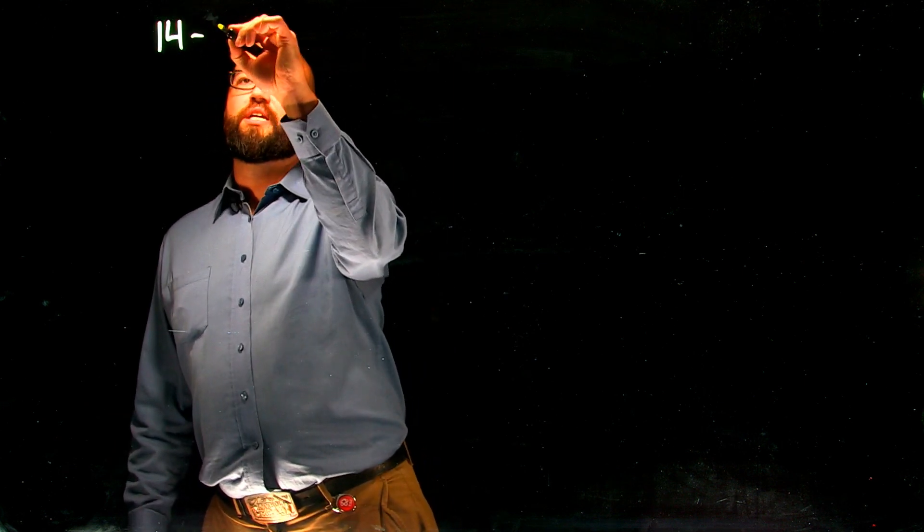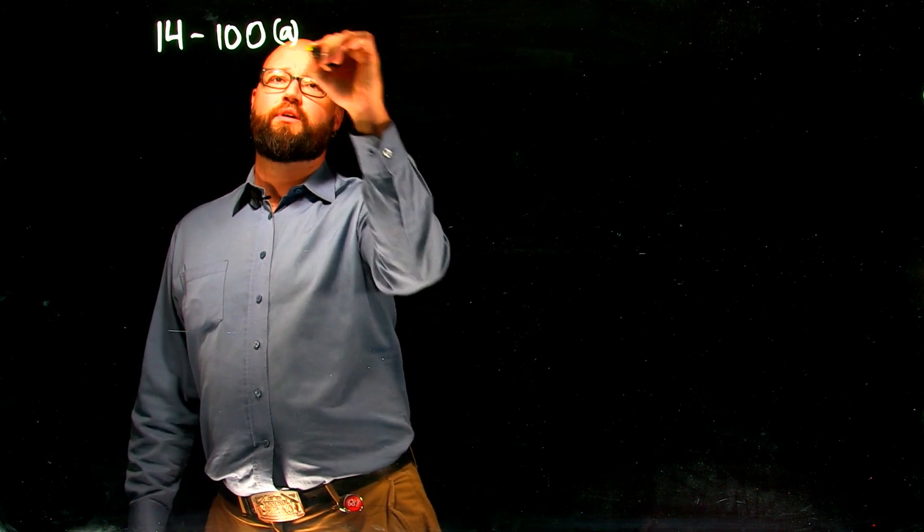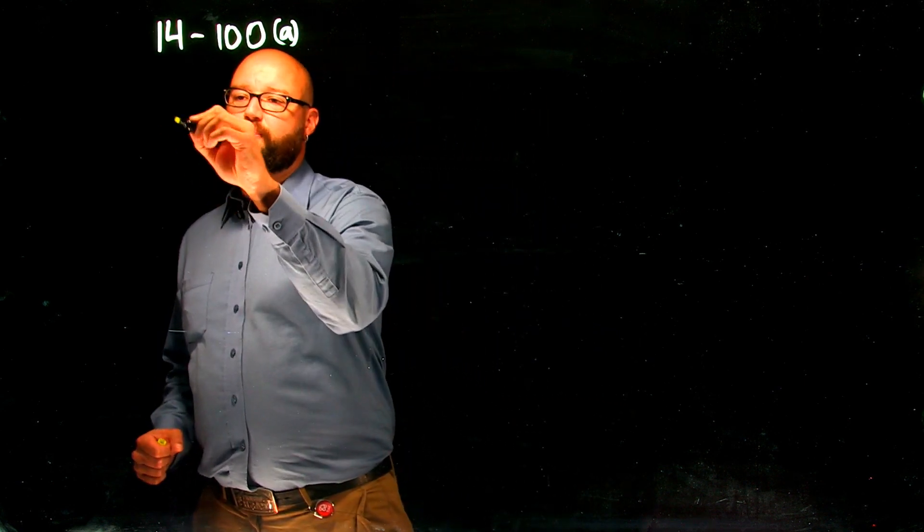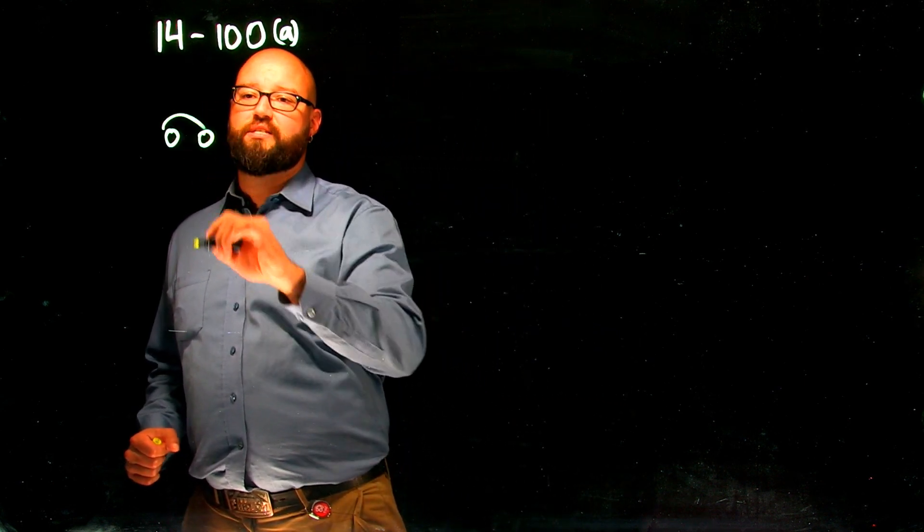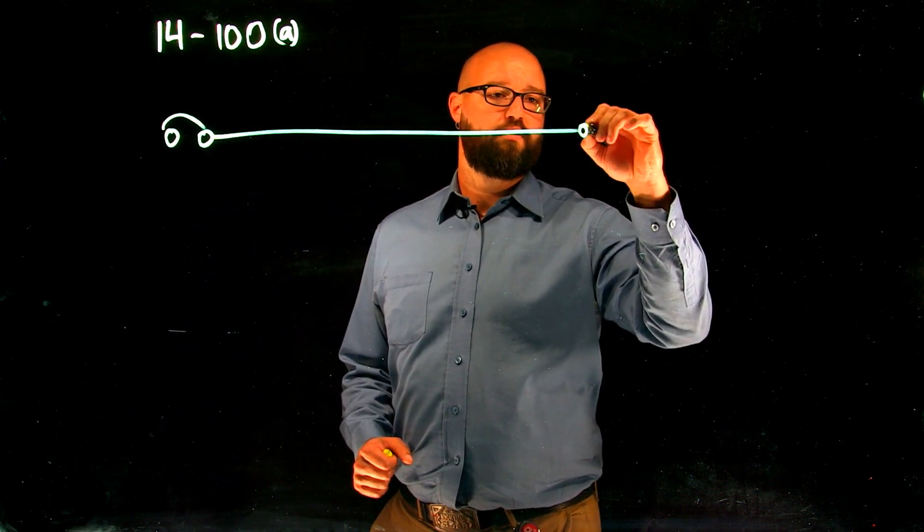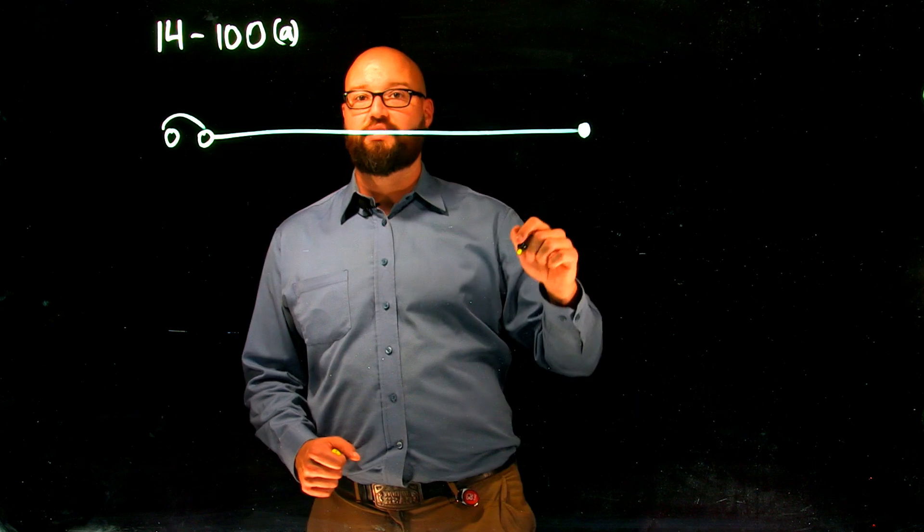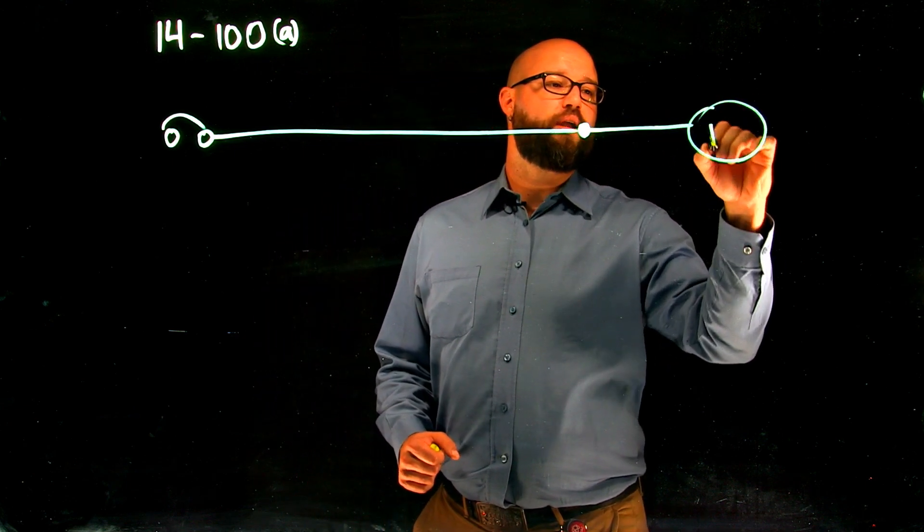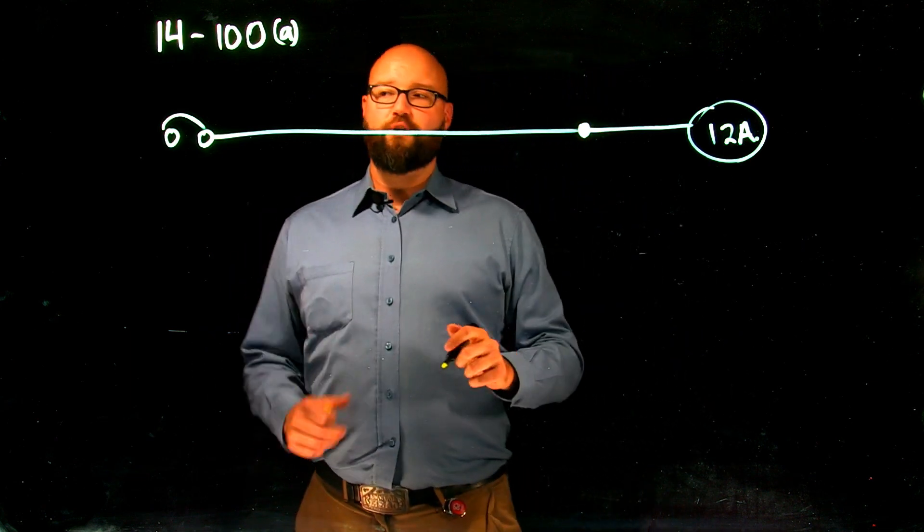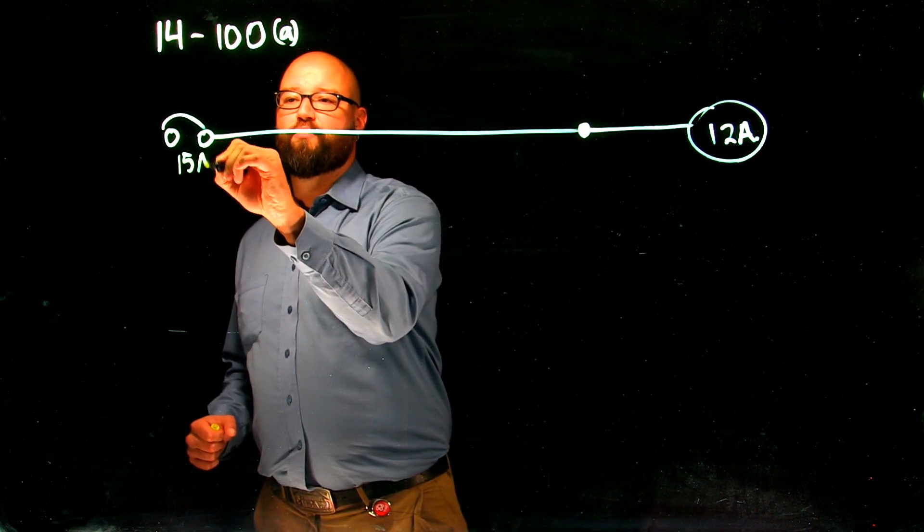For the first one, 14-100A, we're going to take a look at what we do with that. This rule allows us to—if I have an overcurrent device and we come out to a junction or a tap in this case—out to, let's say we have a 12 amp load.